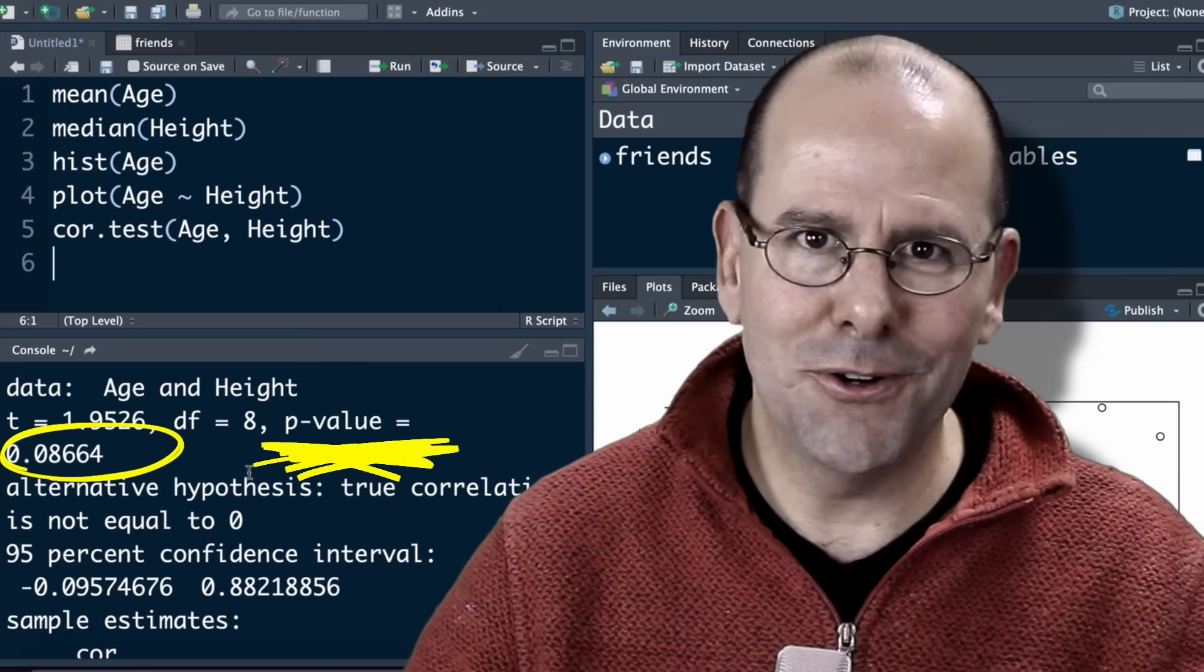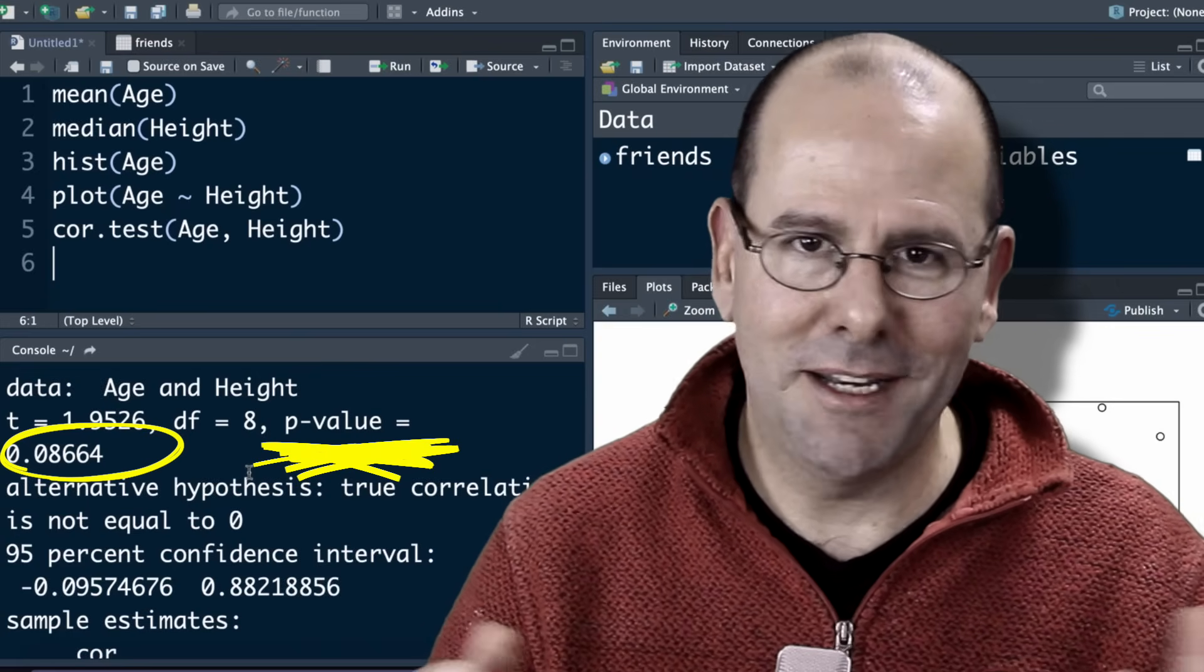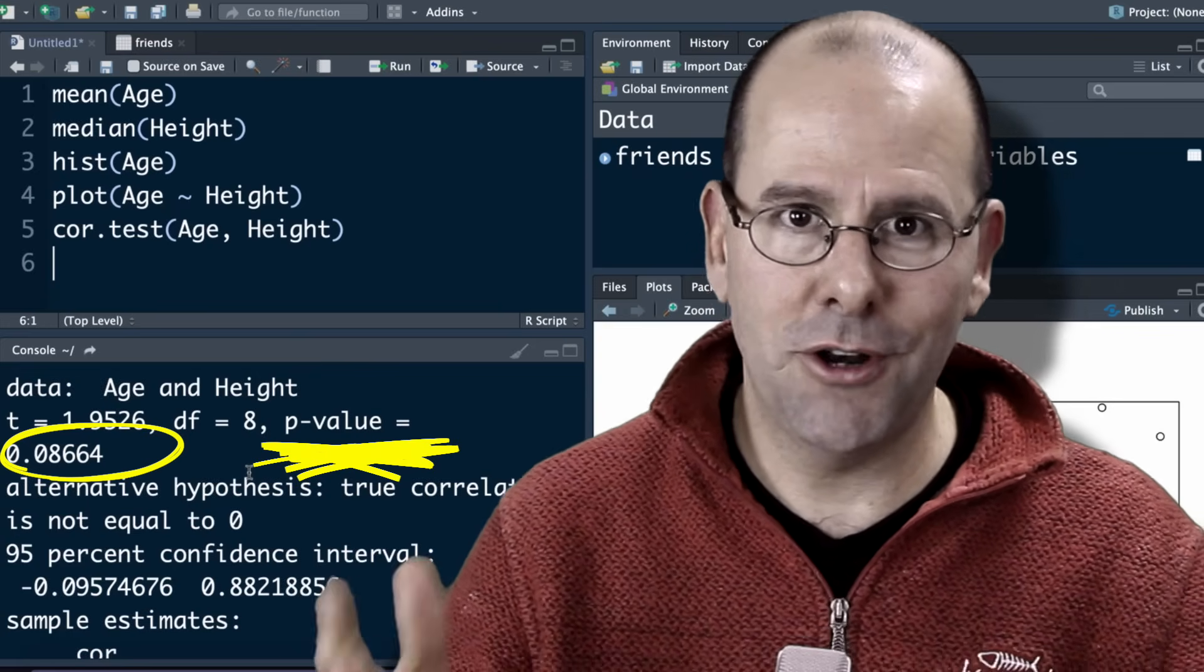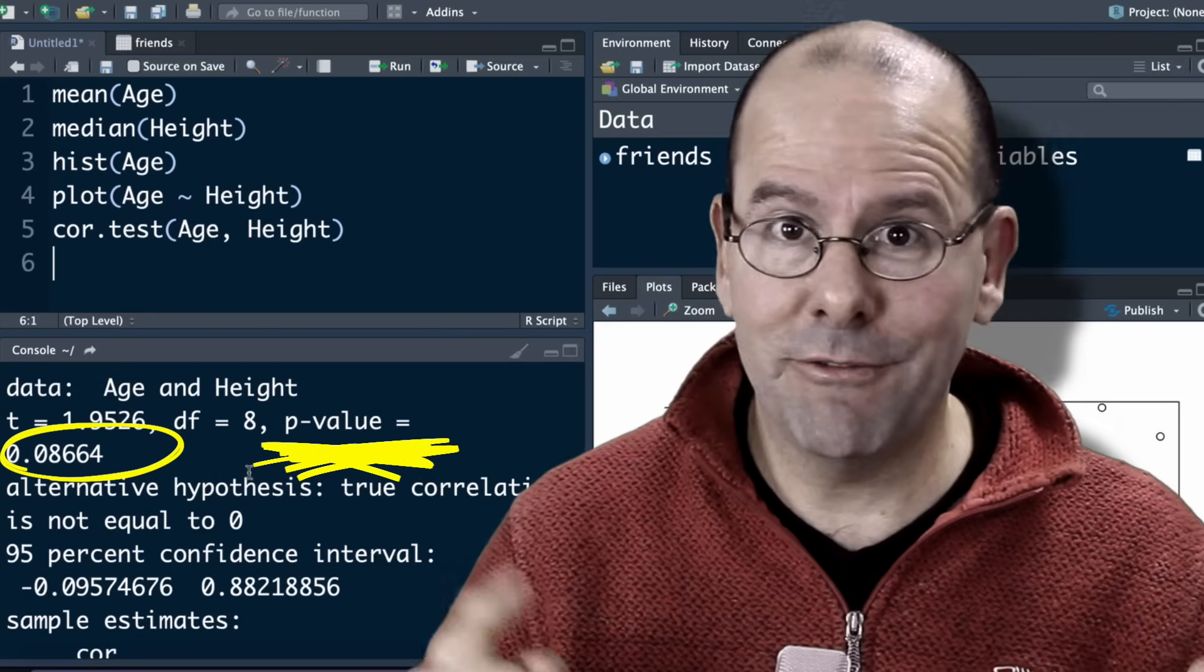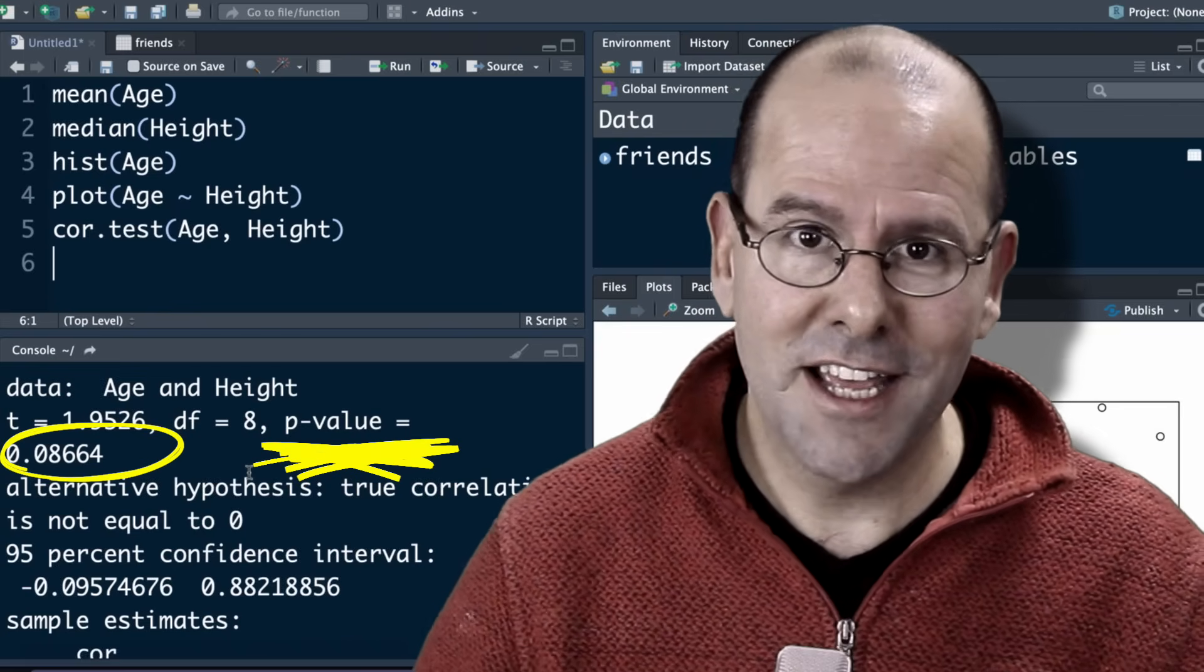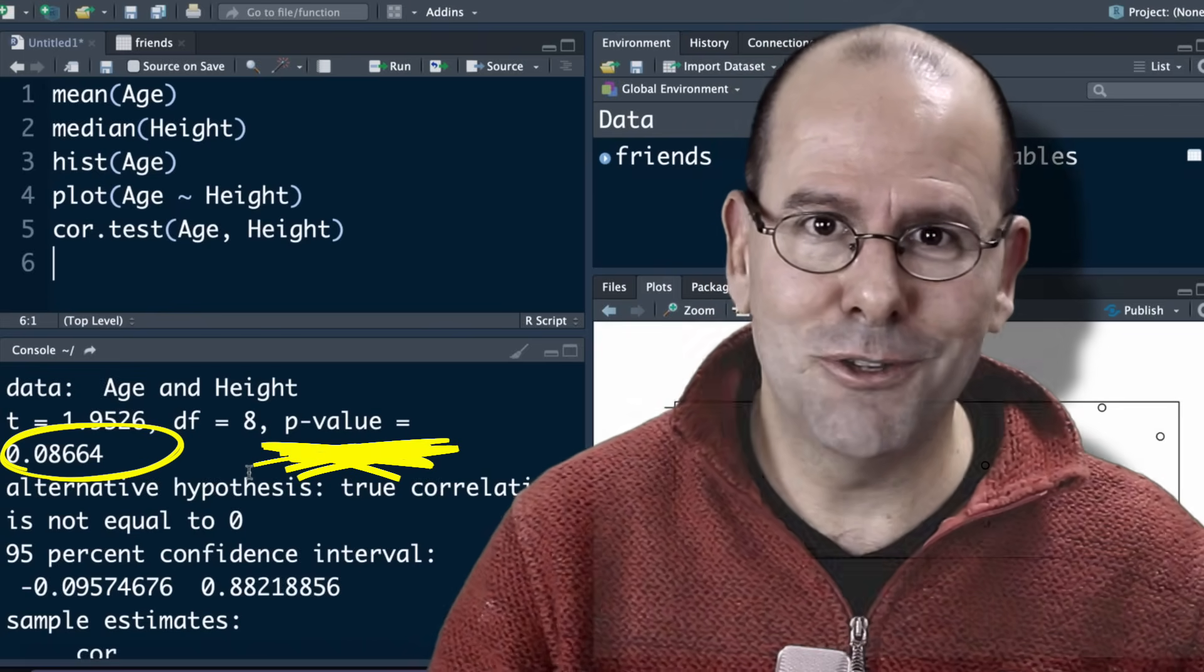Right. So, clearly, writing code is not that scary at all. I haven't broken out into a sweat. You'll notice I don't have a tremor. I don't have a heart palpitation. I haven't fallen over dead. I've actually survived. It's not difficult. It's not scary. You can do it.